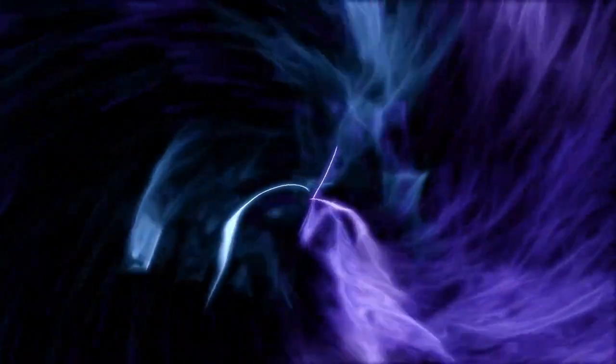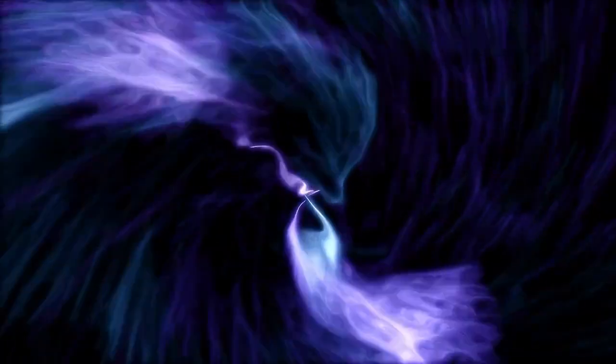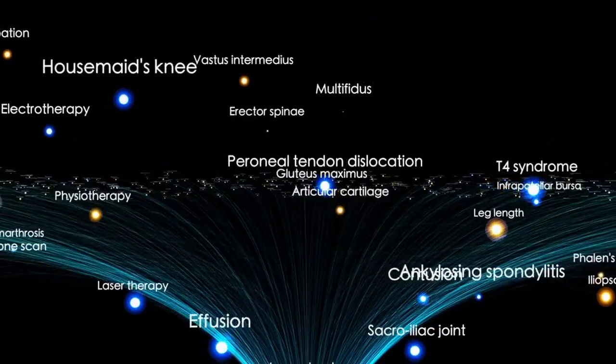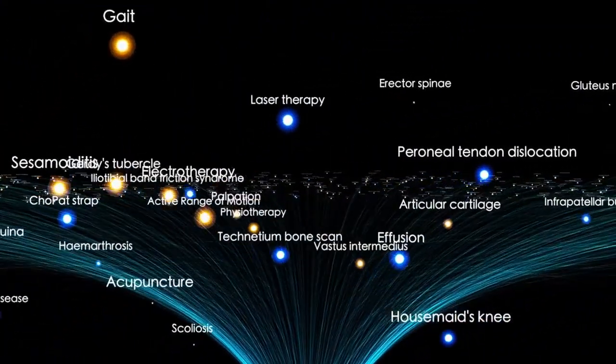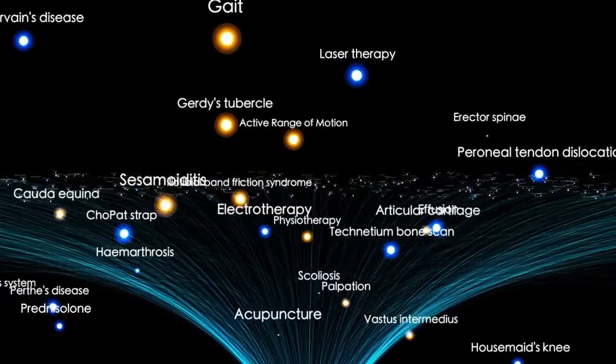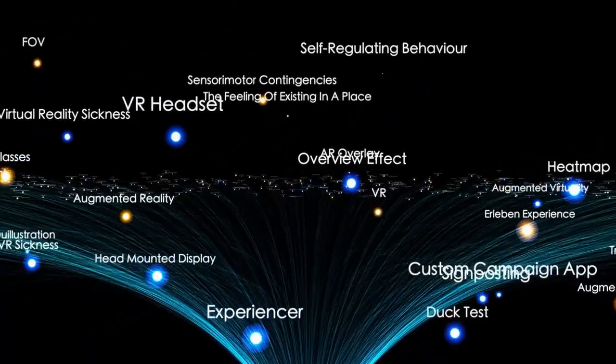Perhaps the most unnerving aspect of 3i Atlas is its path through the solar system. Calculations show it will reach its closest point to the sun on October 30th, passing just inside the orbit of Mars before being flung back into interstellar space.